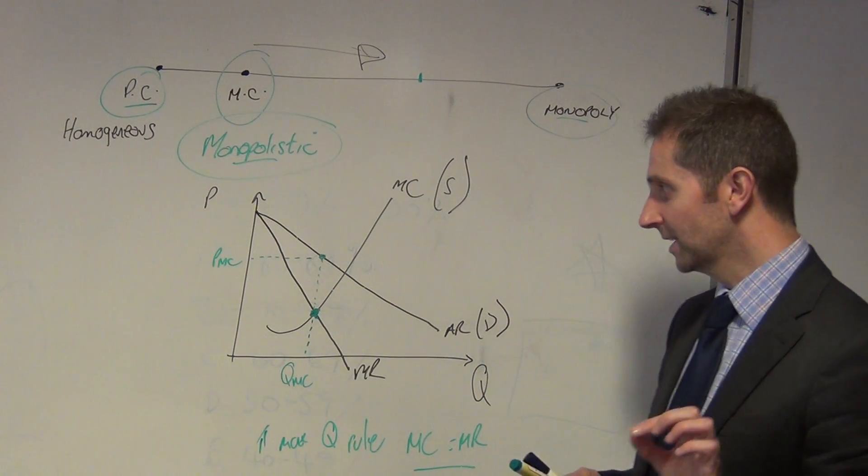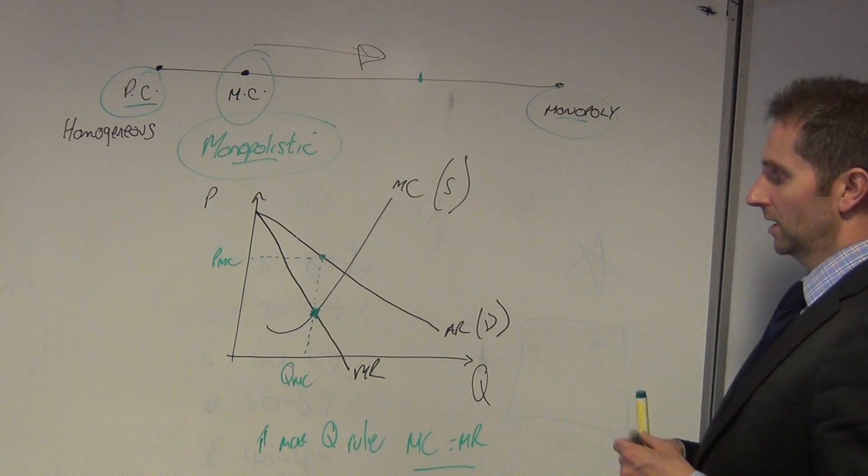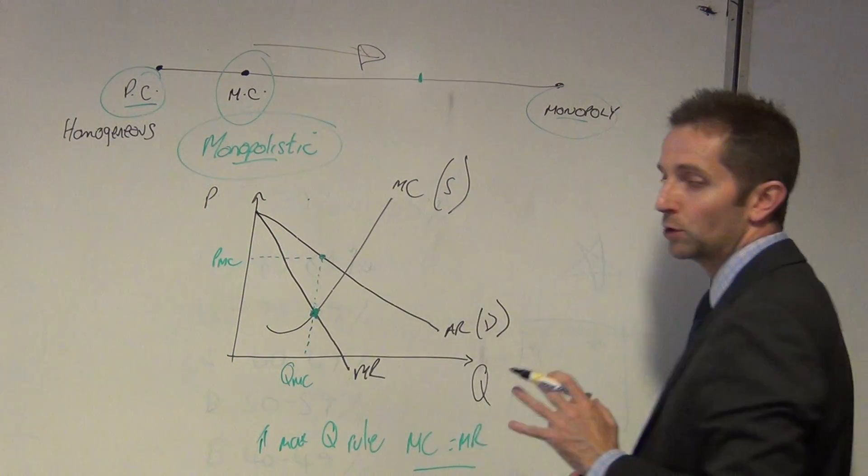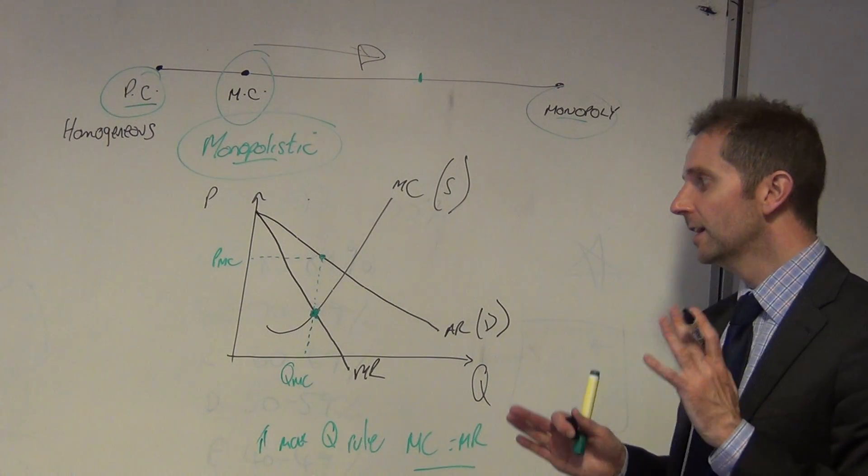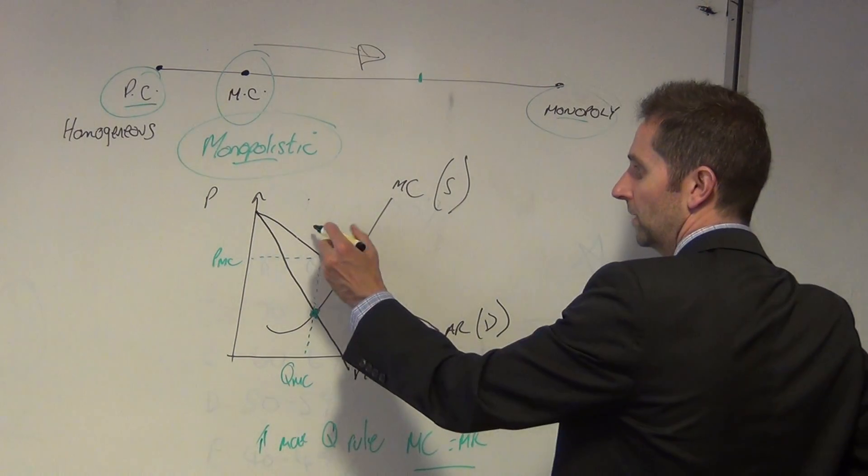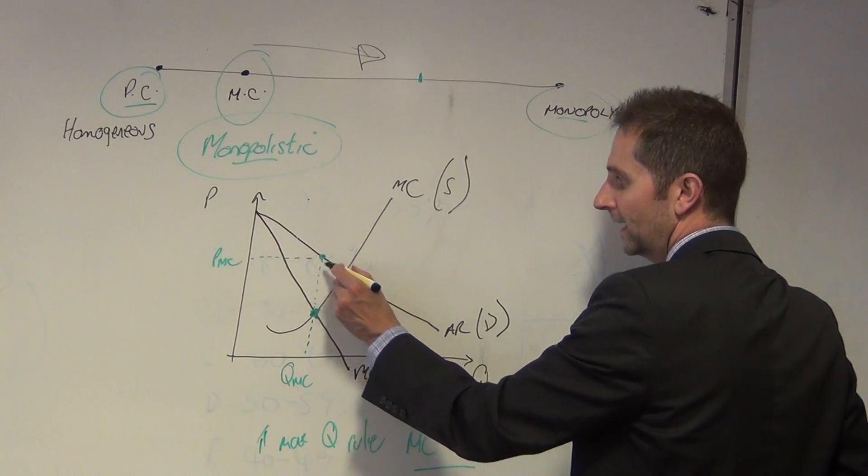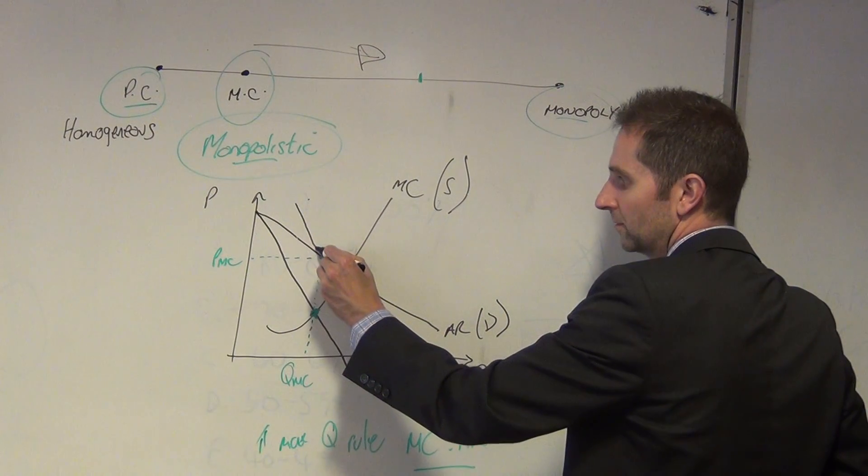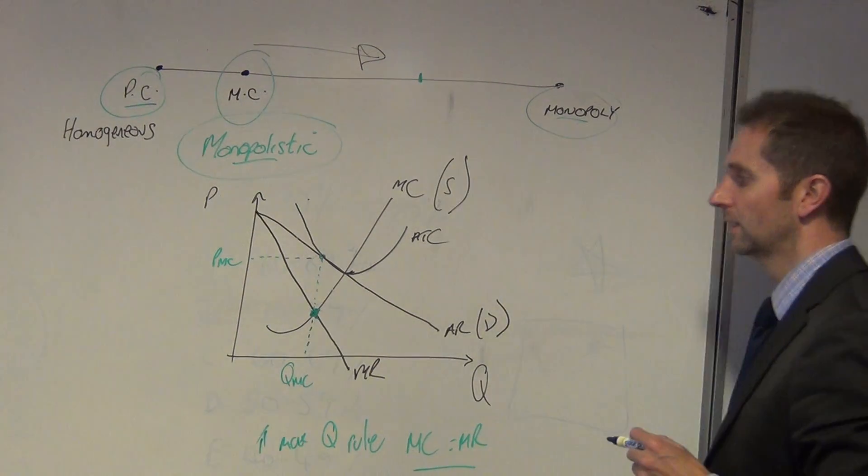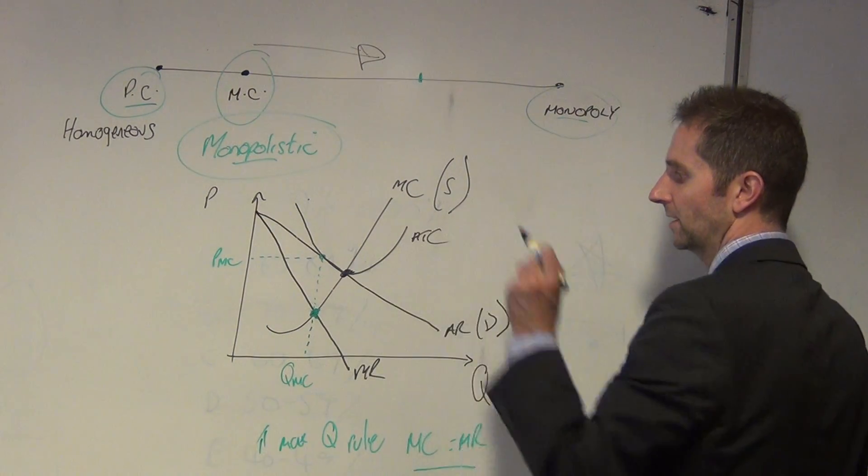So in the short run, it's potentially the case that you can have abnormal profits. But in the long run, what tends to happen and what tends to distinguish the monopolistically competitive firm is that in the long run they tend to be making simply normal profits. So we add our average total cost curve. Again, the minimum point is going through here, and we need to draw this so that it's tangential there and then through like so. Average total cost curve. That is the minimum point on the ATC curve.